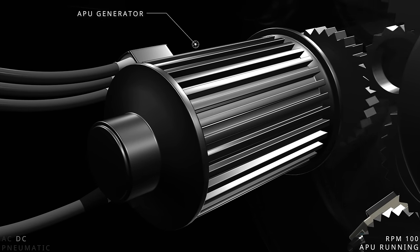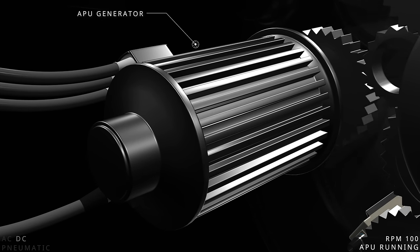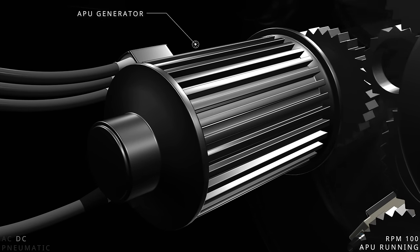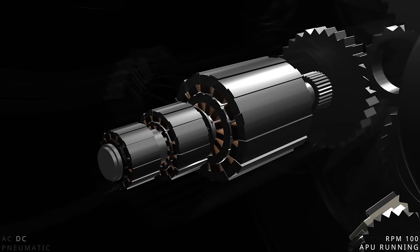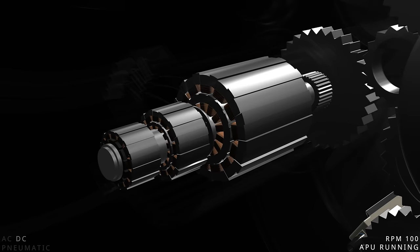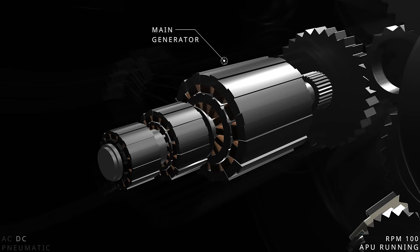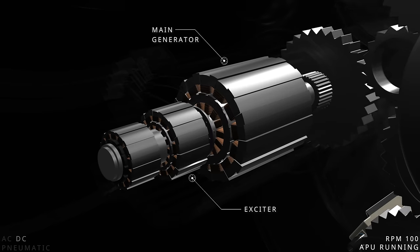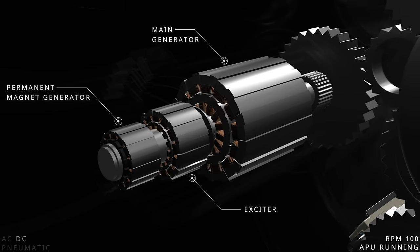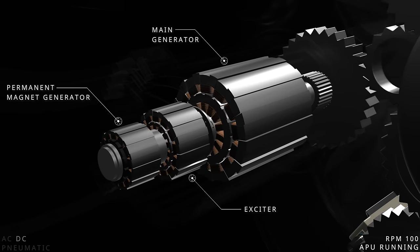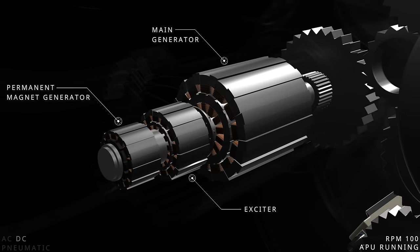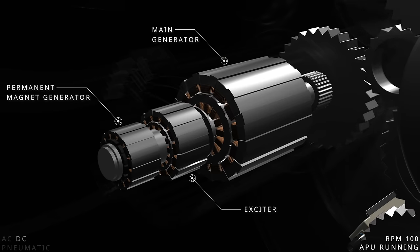The generator converts mechanical energy into electrical energy and has three major components: the main generator, the exciter, and the permanent magnet generator. Each part consists of a stator and a rotor.